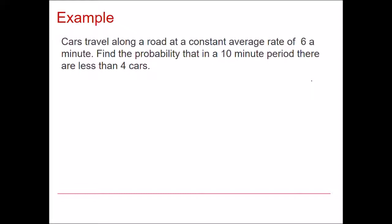Here is another example. Cars travel along a road at a constant average rate of 6 a minute. Find the probability that in a 10 minute period there are less than 4 cars. So here we need to define the number of cars appearing in a 10 minute period given that we know how many it is in a single minute.